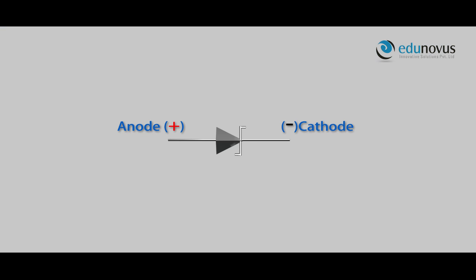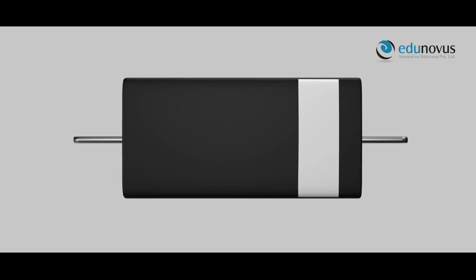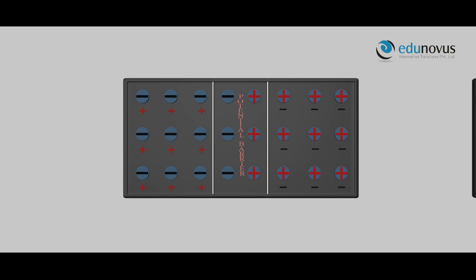A zener diode is represented in this way in a circuit, and in the real world it looks like this. A white line on one end indicates that it is the negative terminal. A zener diode is a normal junction diode which is heavily doped when compared to the normal diode.